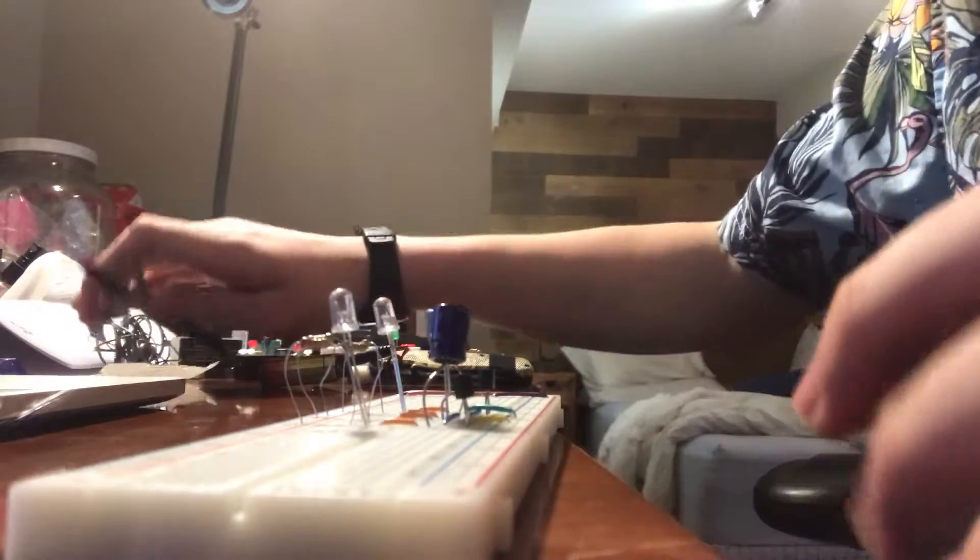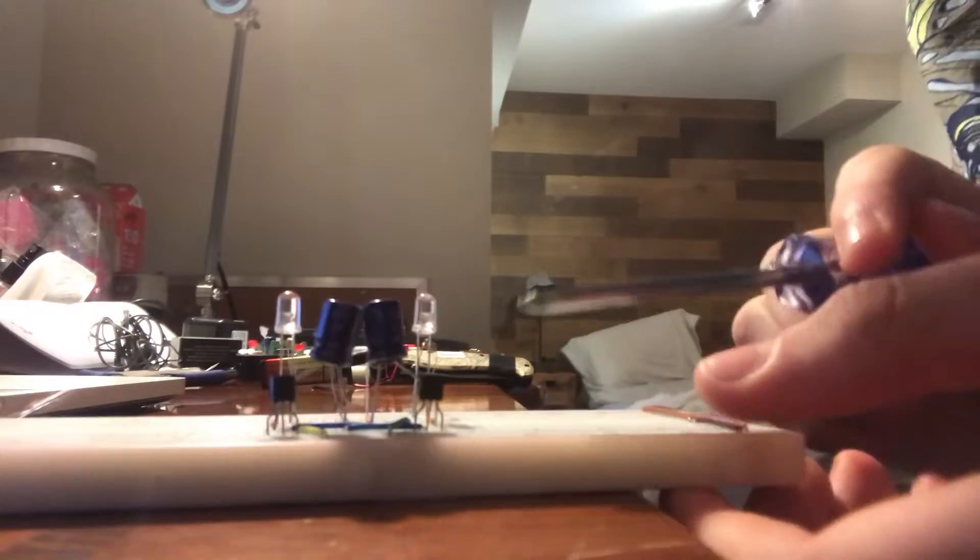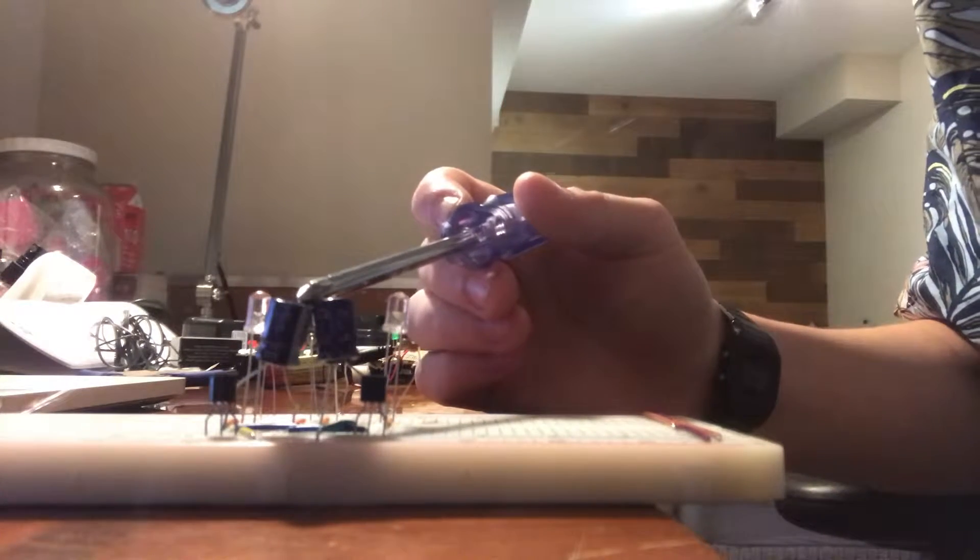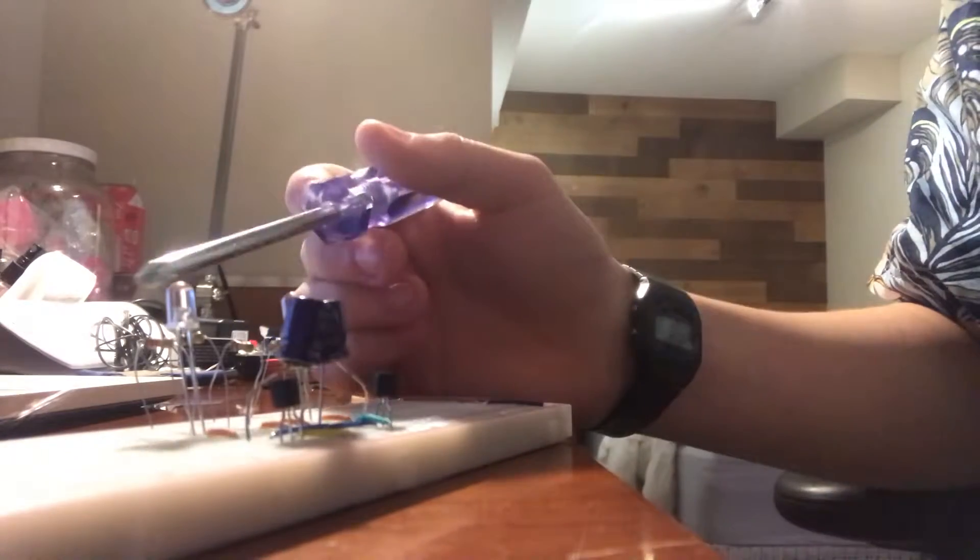Here is my final astable multivibrator. The components we have are two 3904 NPN transistors right here and here, two 100 microfarad capacitors, and two five millimeter LEDs.